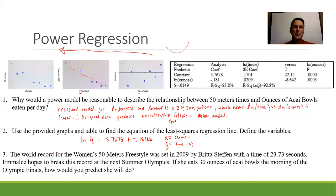So last and final question, it says, the world record for the women's 50-meter freestyle was set in 2009 by Britta Steffen with a time of 23.73 seconds. Emily hopes to break this record at the next Summer Olympics. If she eats 30 ounces of acai bowls the morning of the Olympic finals, how would you predict that she will do?